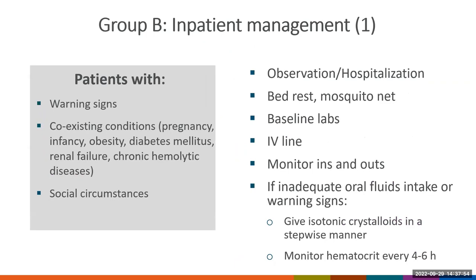Patients with warning signs, coexisting conditions that increase the risk of severe dengue, or social circumstances that prevent them from quickly returning to hospital are assigned to group B. In the context of the U.S., this will most likely correspond to hospitalization. These patients should be under bed rest and a mosquito net, with baseline labs, an IV line, and monitoring of ins and outs. If the patient has warning signs or inadequate oral fluid intake, start isotonic crystalloid solutions in a stepwise manner. The hematocrit should be monitored every four to six hours if IV fluids are started.